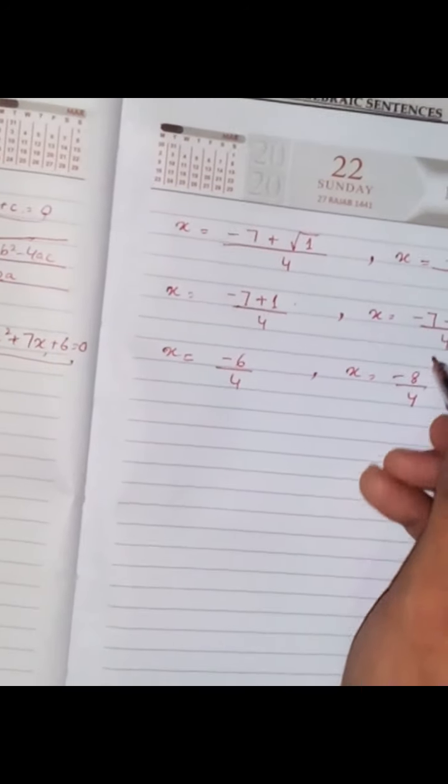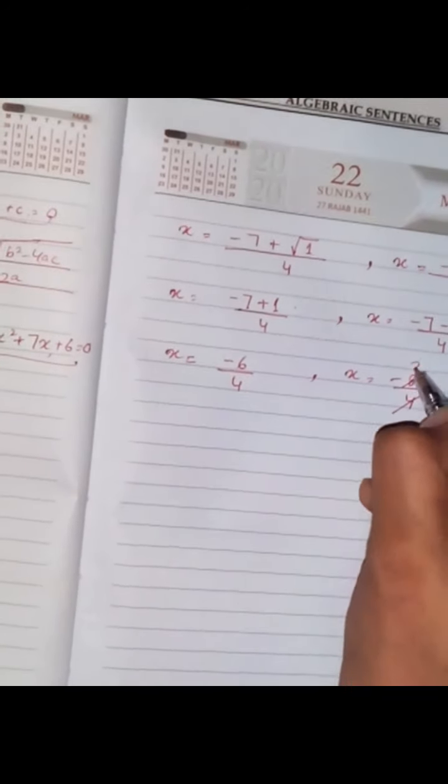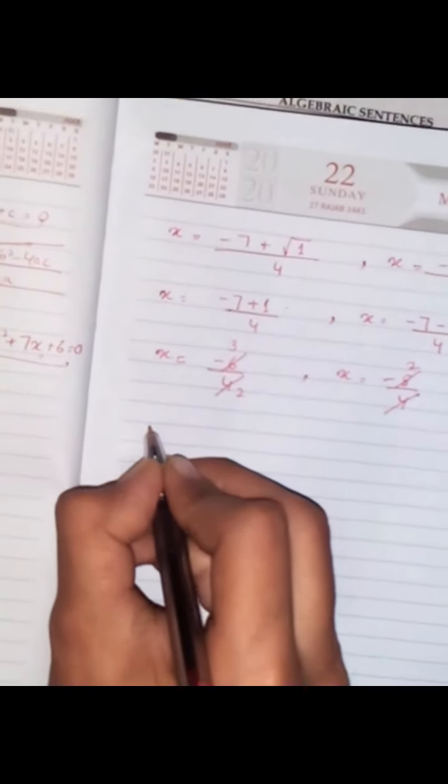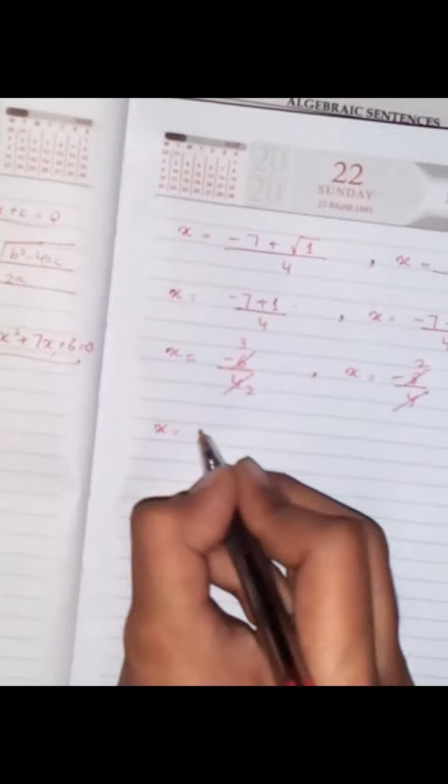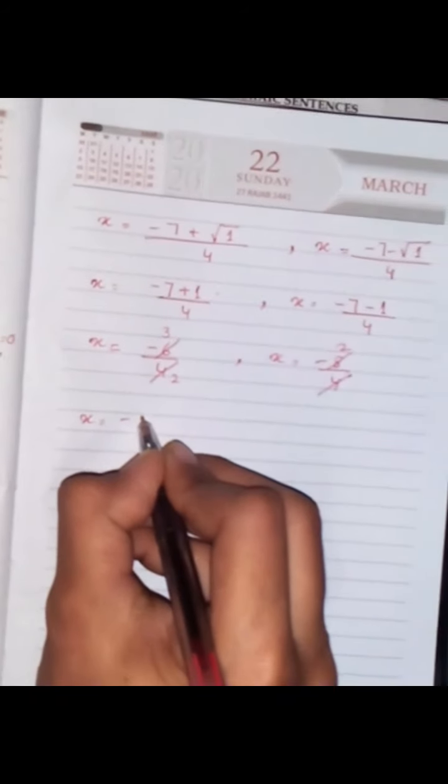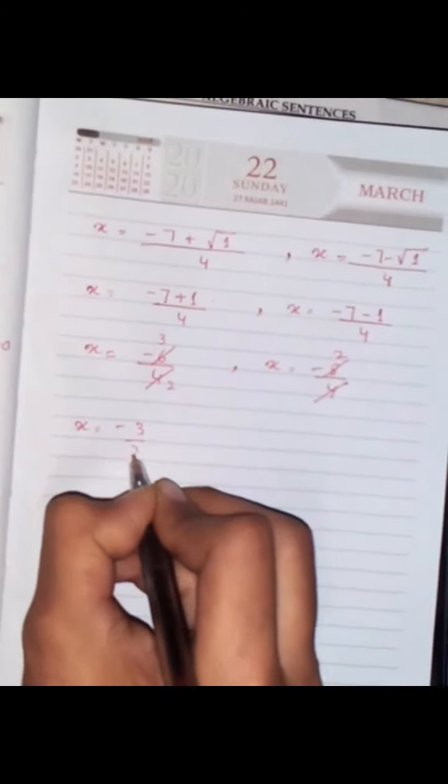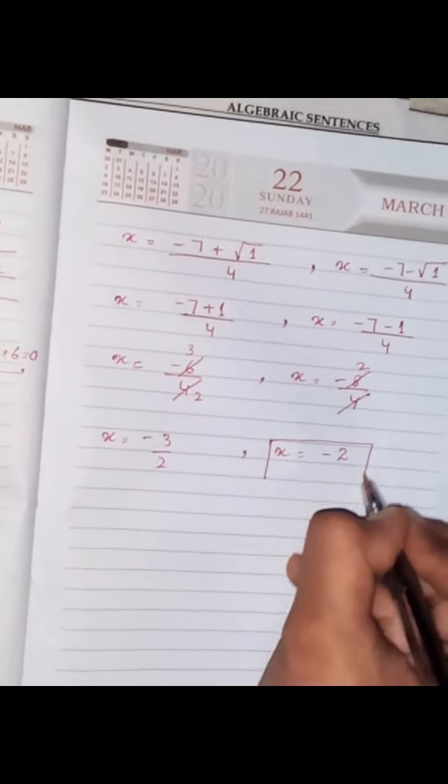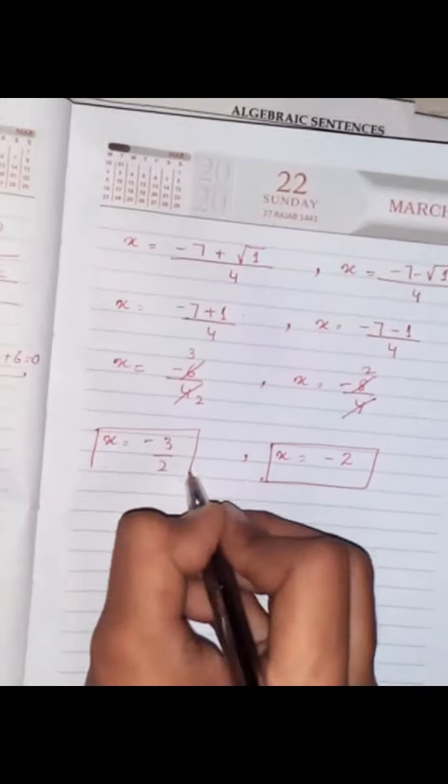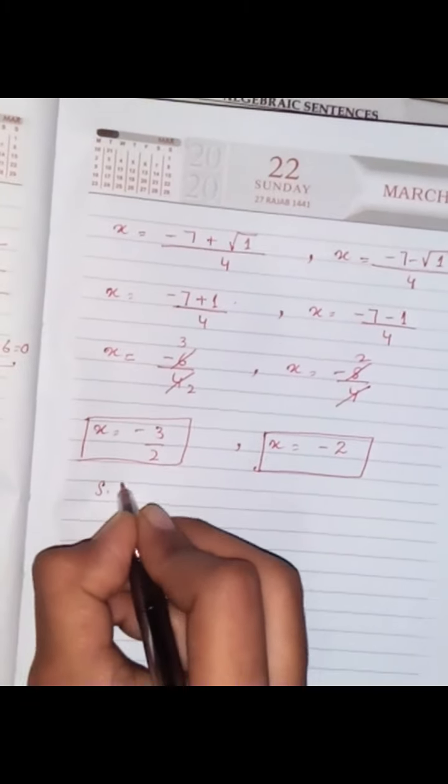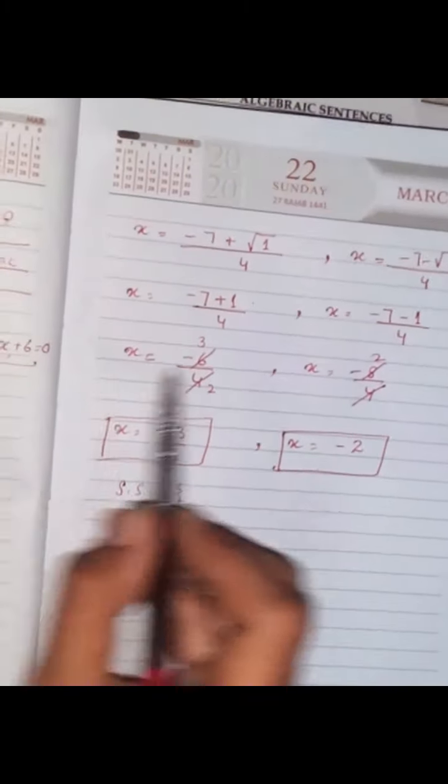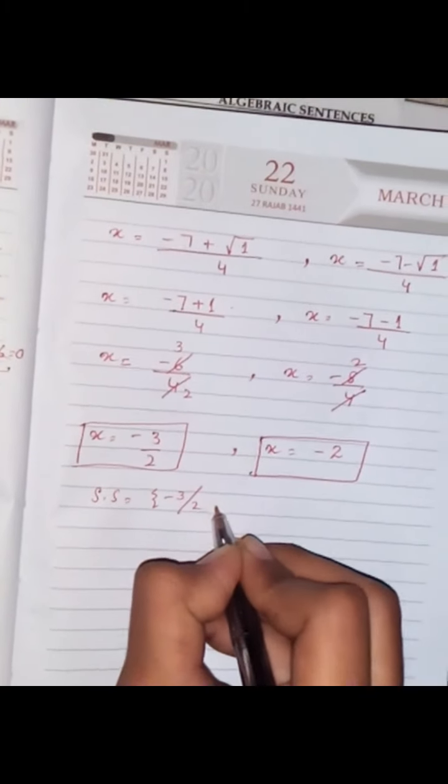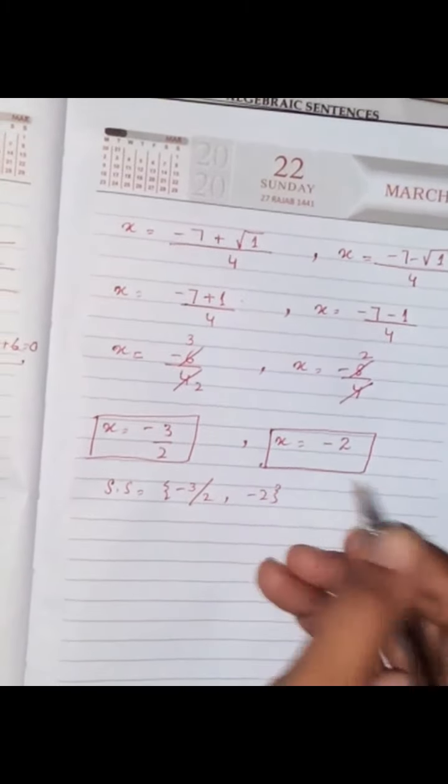Now we can simplify these numbers. We will get the values: x = -3/2 and x = -2. This is the solution set of the given equation, so {-3/2, -2} will be the answer.